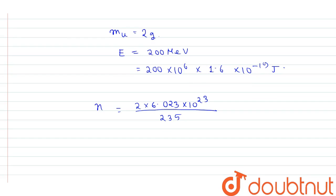we get 2 into 6.023 into 10 power 23 divided by 235. Now total energy released is given by the relation